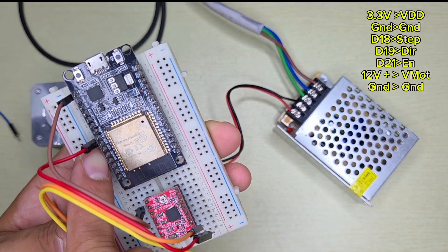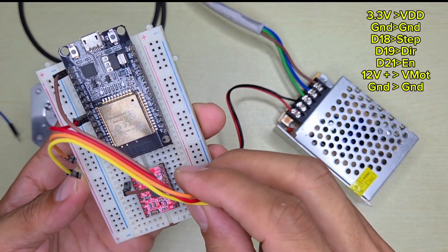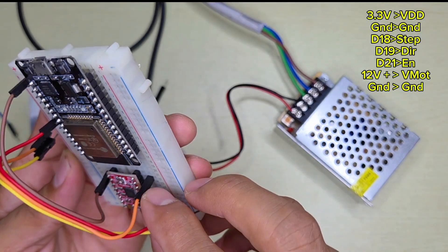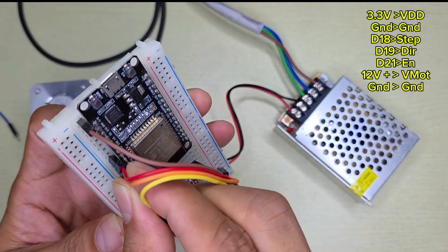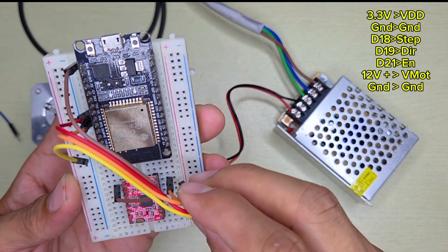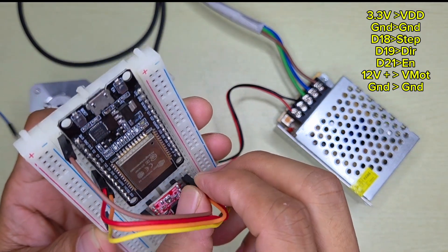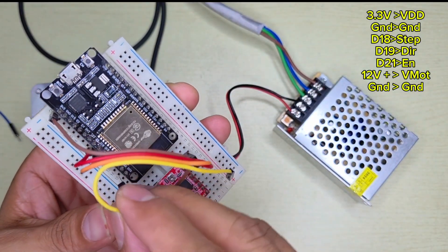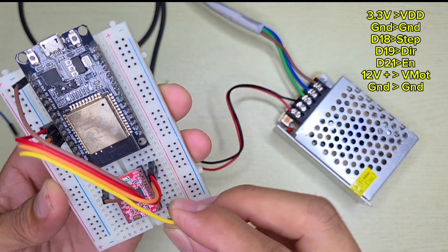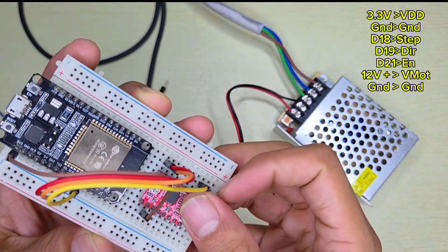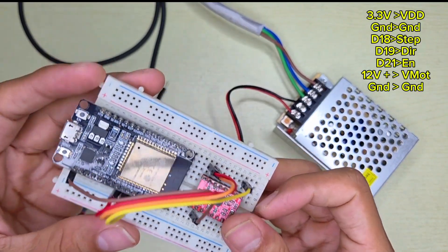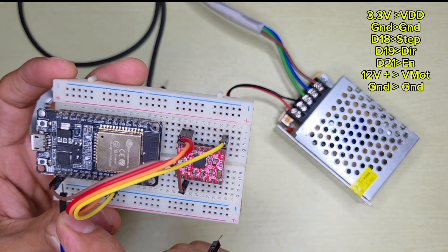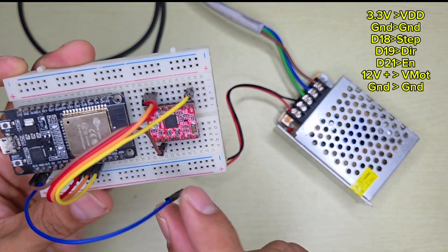Pin number 18 here, and 18 we connect to step. This pin number 19 from ESP we connect to DIR which is for direction. Pin number 21 we connect to EN which is for enable pin. This is optional, but we're not going to forget the ground from ESP32. The ground we connect to the ground of the stepper driver here.